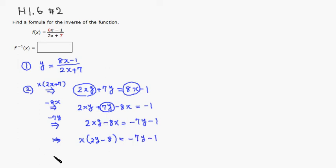Then we can finally divide both sides by quantity 2y minus 8. You get x is isolated, which is what we wanted.